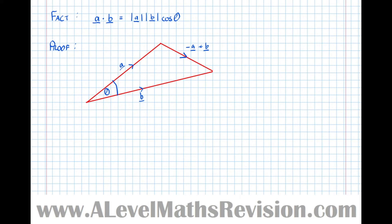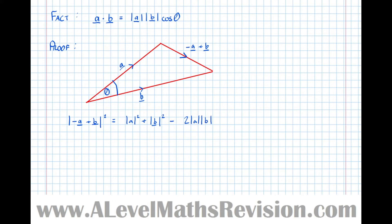Notice we've got a cos theta here, so we're going to try and relate everything to cos theta. We're going to use the cosine rule. So the length of this side, when we apply the cosine rule, gives: the length of minus A plus B squared equals the length of A squared plus the length of B squared minus 2 times the length of A times the length of B cos theta.